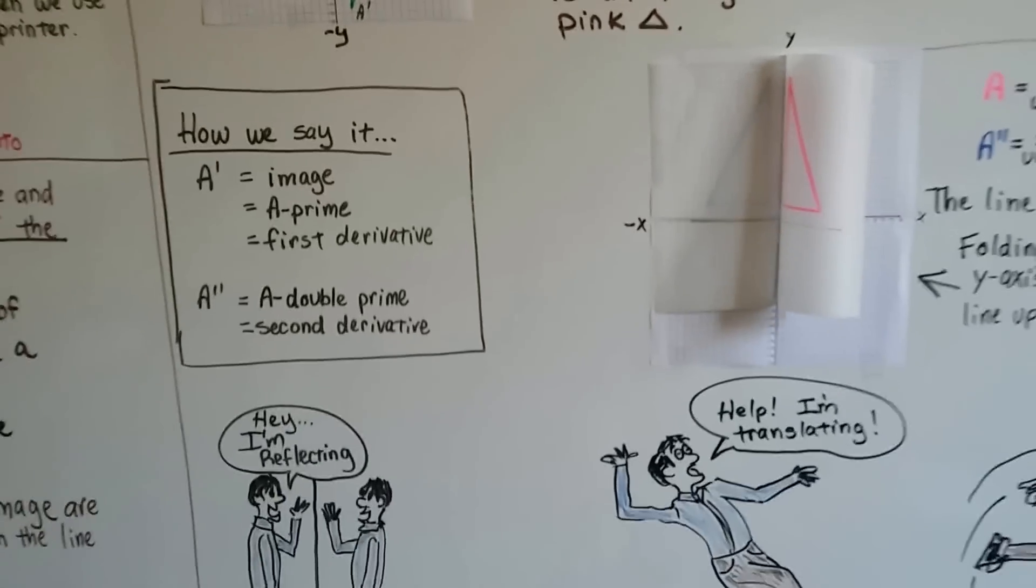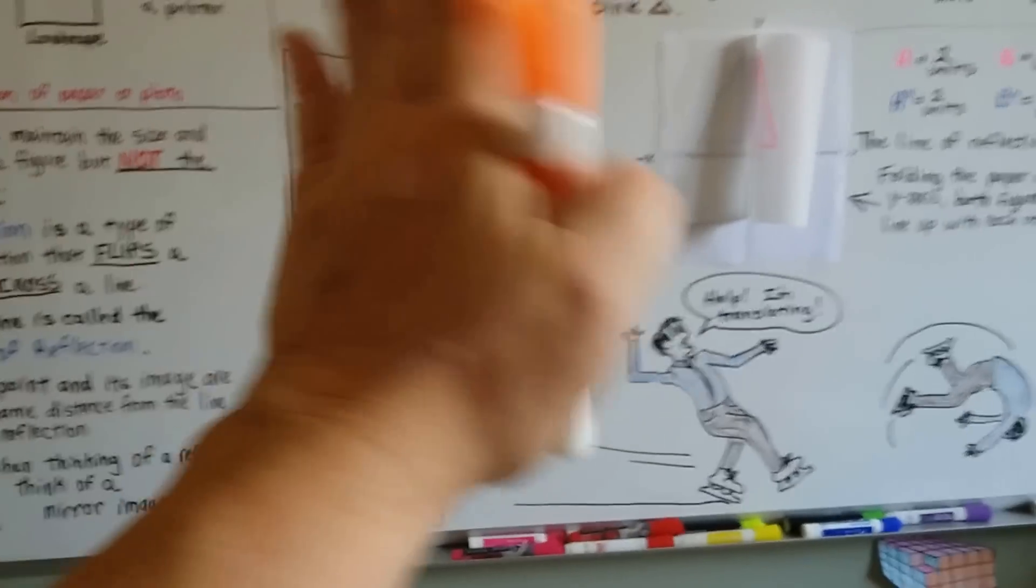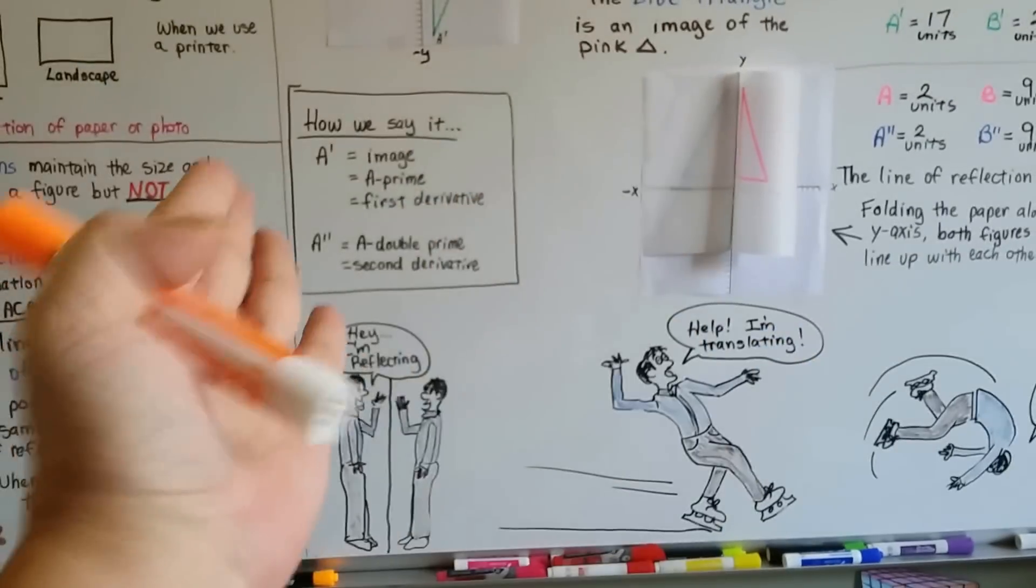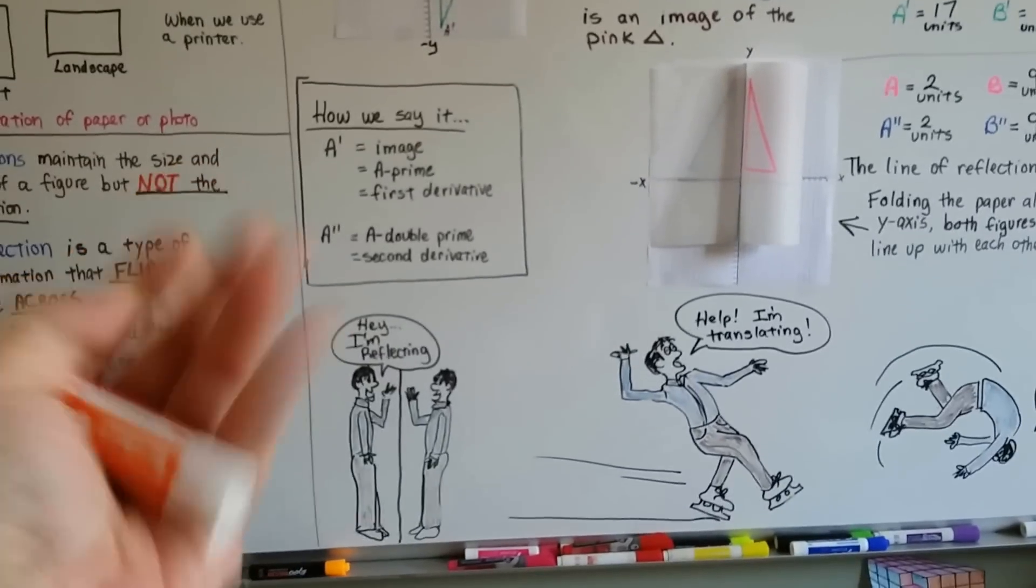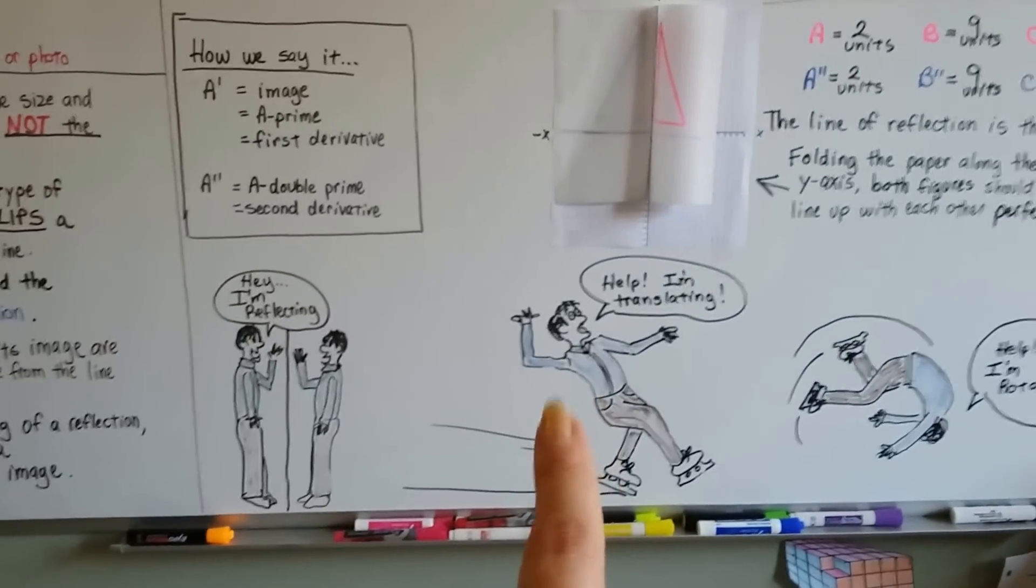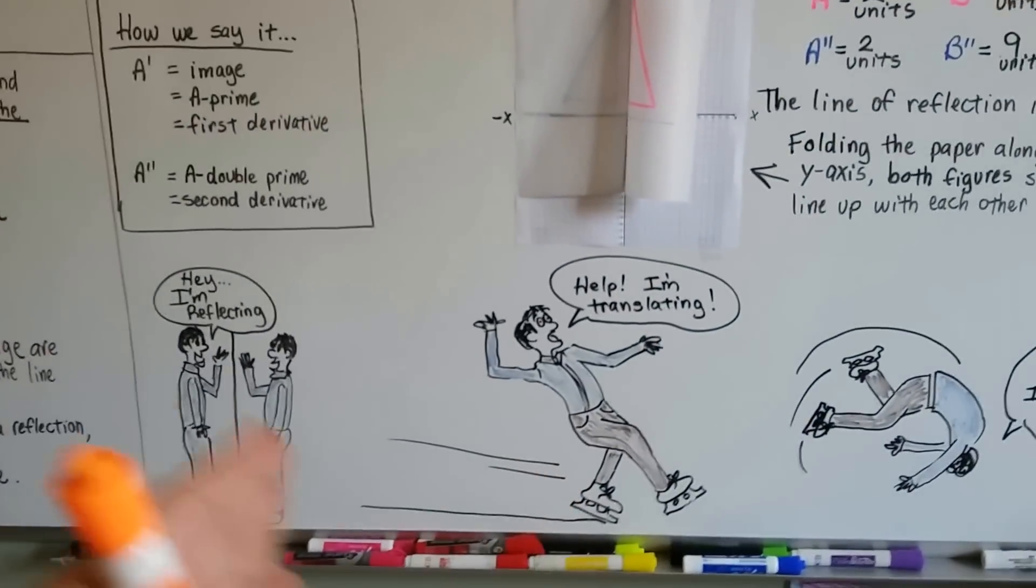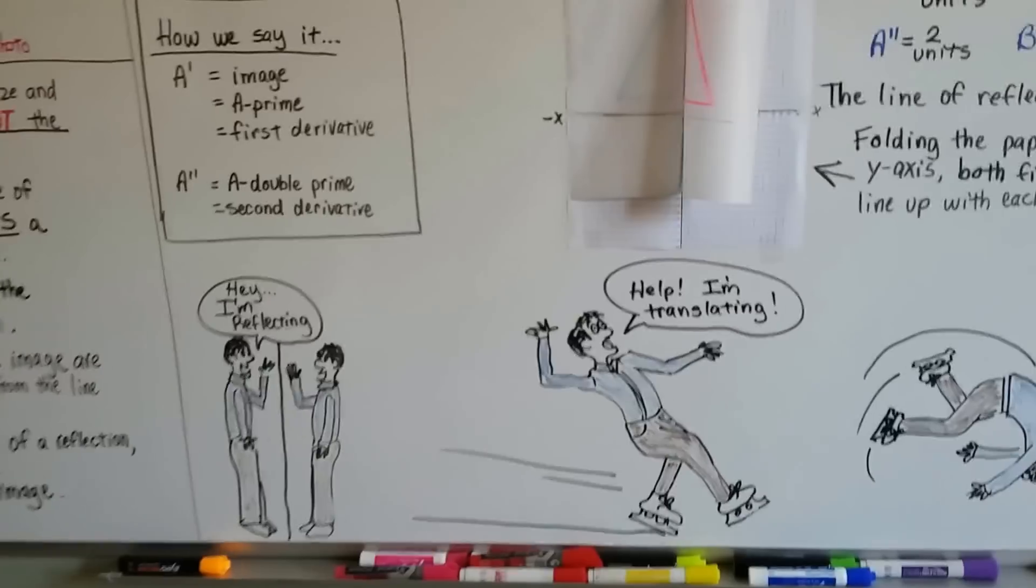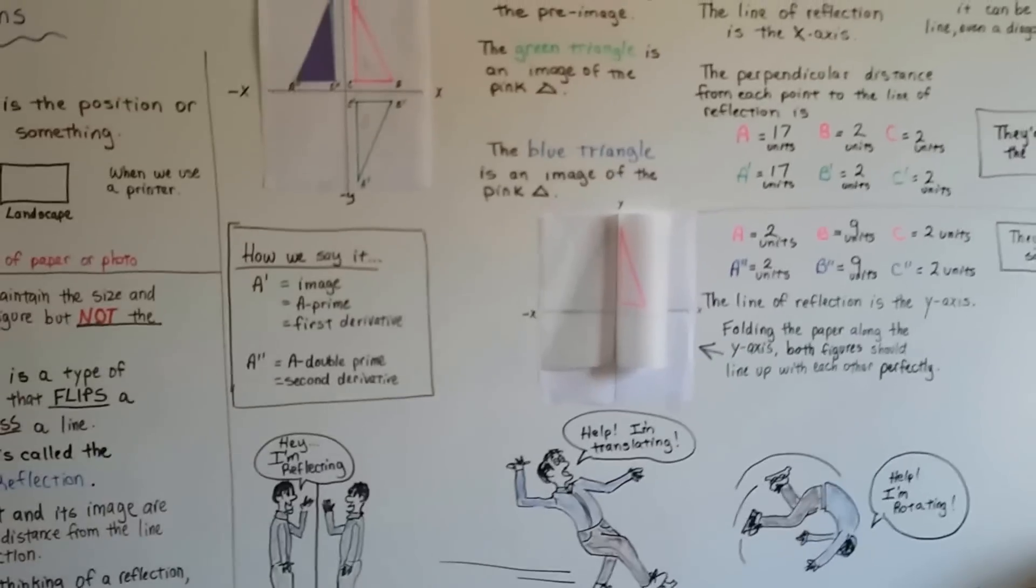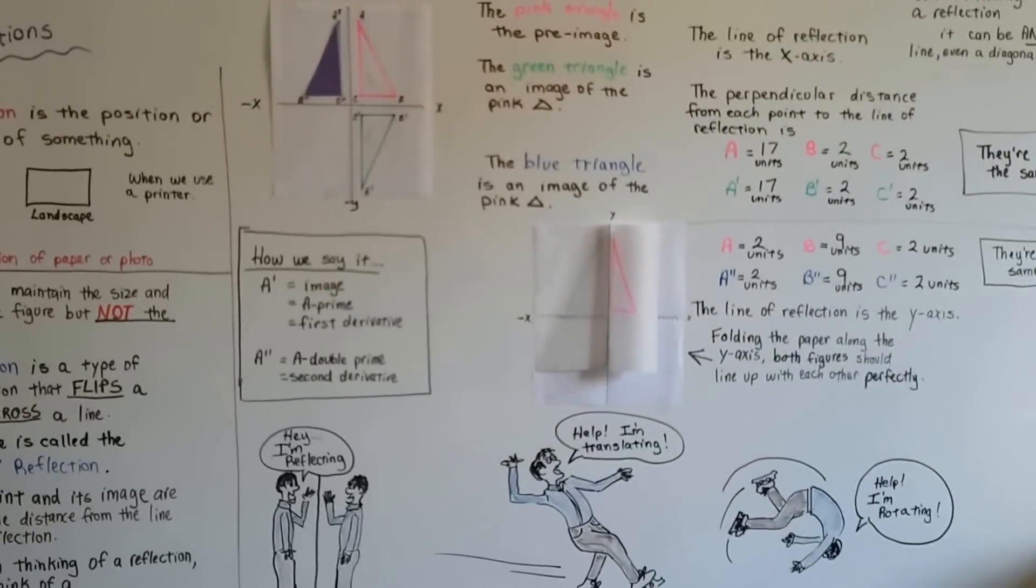So remember that a reflection is a flipped over a line image of the original. A reflection is like a mirror image. In our last video we talked about translating, that's like sliding. So that is how we're going to explore reflections.